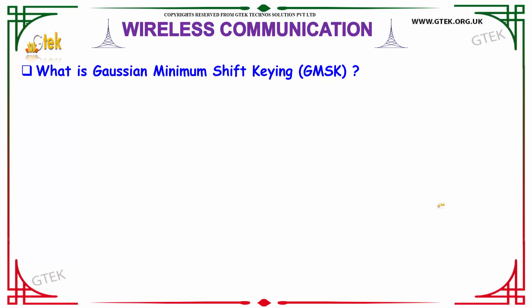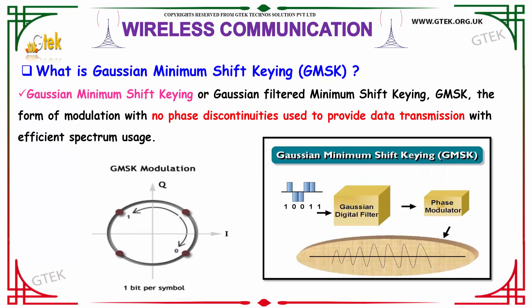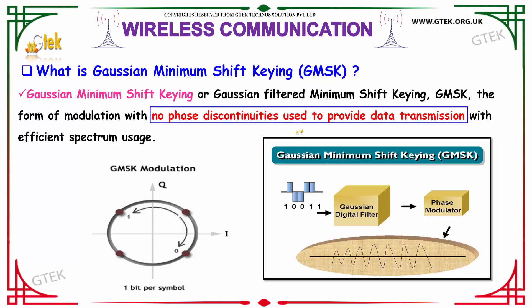What is Gaussian Minimum Shift Keying, or GMSK? GMSK, also known as Gaussian filtered minimum shift keying, is a form of modulation with no phase discontinuities, used to provide data transmission with efficient spectrum usage. Since it is continuous with no phase discontinuities, this provides efficient spectrum usage.